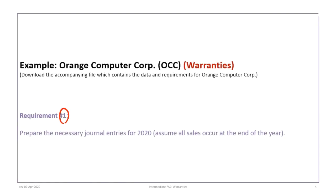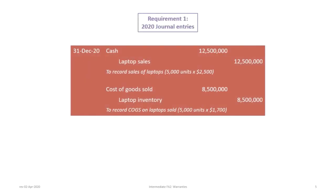Let's look at requirement one: prepare the necessary journal entries for 2020, assuming all sales occur at the end of the year. Our first entry, dated December 31, 2020, is a debit to cash and a credit to laptop sales for 5,000 units at $2,500 each, totalling $12,500,000. The associated cost of goods sold is 5,000 units at $1,700, which is $8,500,000 — debit to cost of goods sold and credit to laptop inventory.